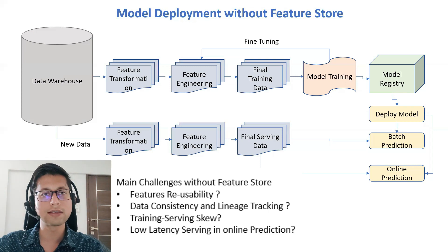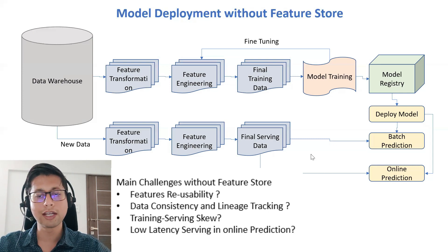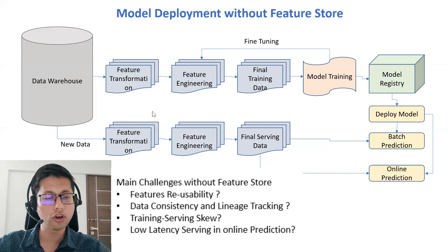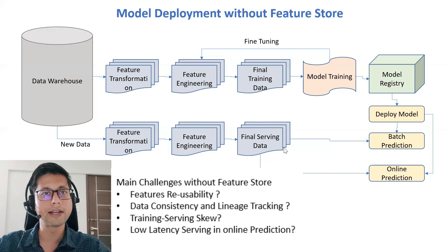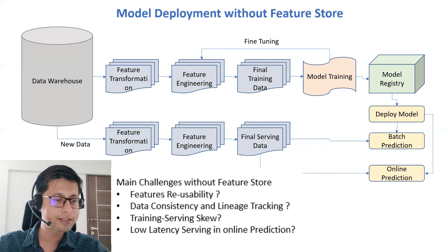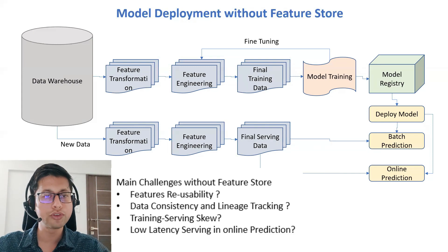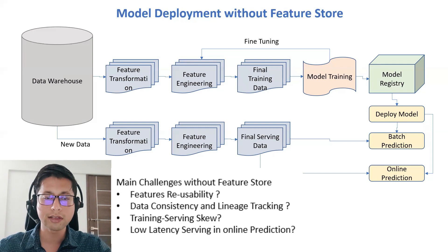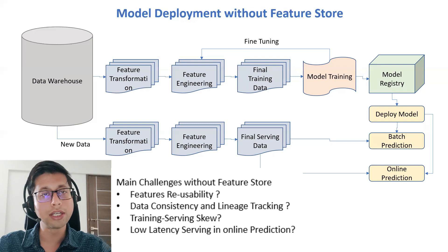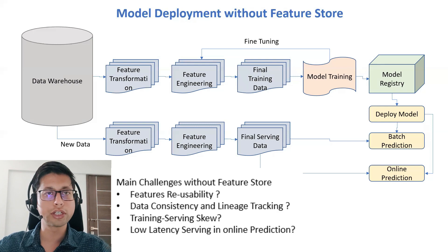Another challenge is low latency serving for online prediction. In online prediction we expect data to be served as fast as possible. If we're doing all these feature calculations at runtime, it becomes very time-consuming. These are the main challenges — there are more which you can read in the documentation link in the description — but these are the primary ones we face without a feature store in place.